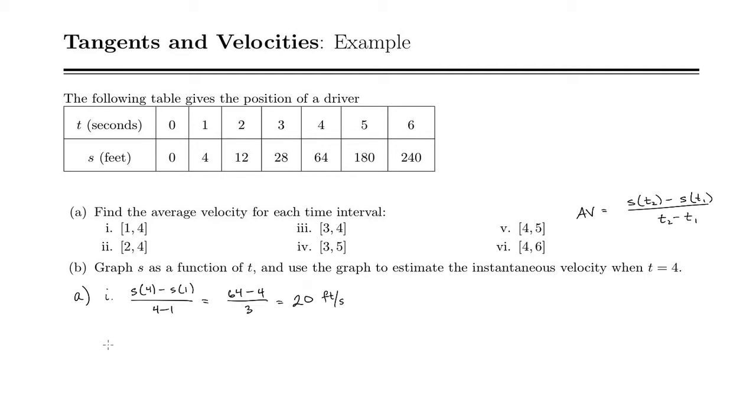For part 2, we'll do s of 4 minus s of 2 over 4 minus 2. So s of 4 was 64, s of 2 is 12 divided by 2. So that's 52 divided by 2, or 26 feet per second.